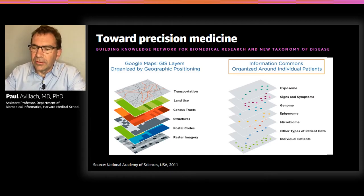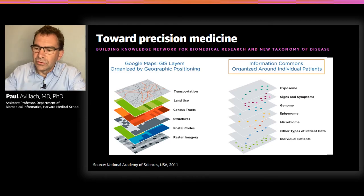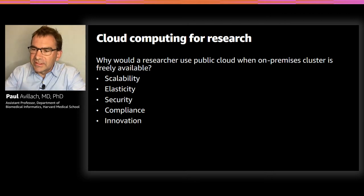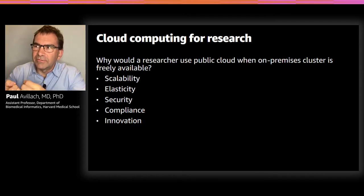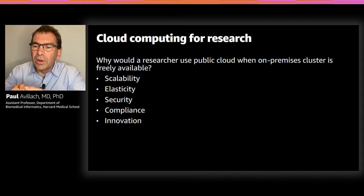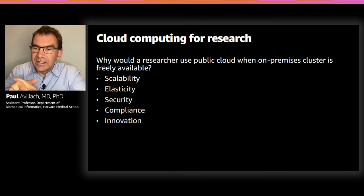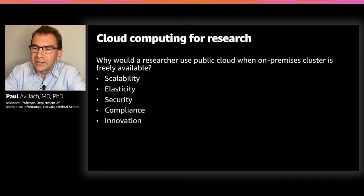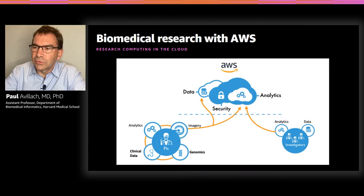This is very important in the context of precision medicine to be able to find new treatments. The whole technology behind that is to enable us to scale. Why would a researcher use a public cloud when on-premise clusters within his institution are freely available? The main reasons we see are scalability, elasticity, security — where it's much more secure to be in the cloud with all the security components — compliance, and the scalability of innovation that couldn't be done when you buy your on-premise servers.